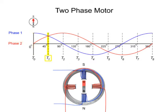At time 1, phase 1 and phase 2 have equal amounts of current flow, which creates a flux between the adjacent poles. This flux causes the rotor to turn 45 degrees to the left.